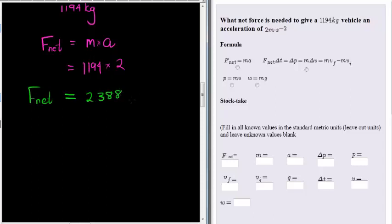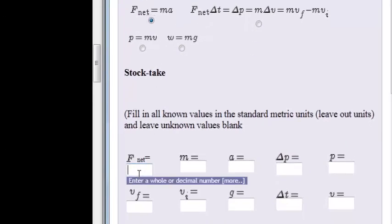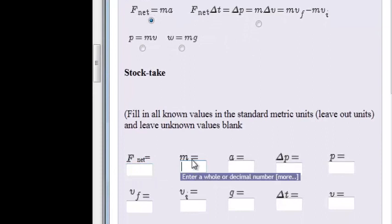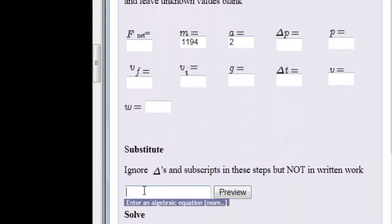Okay, we're measuring force in newtons, so that's the answer. Let's put it in. We use this formula: the net force we don't know, the mass we had is 1194, acceleration we desire is 2 meters per second squared. And substituting was a simple calculation.